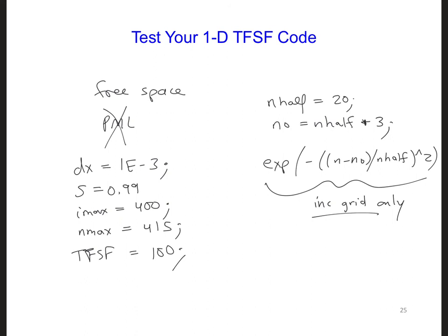Plot the primary grid Ez. So we want to look at Ez, plot Ez. And keep in mind that since total field scatter field is equal to 100, there will be a delay before you see the wave propagating into the primary grid. It's going to take a while for the wave to get over to 100 grid cells. So you might also want to plot the incident Ez to check the waveform in the incident grid.